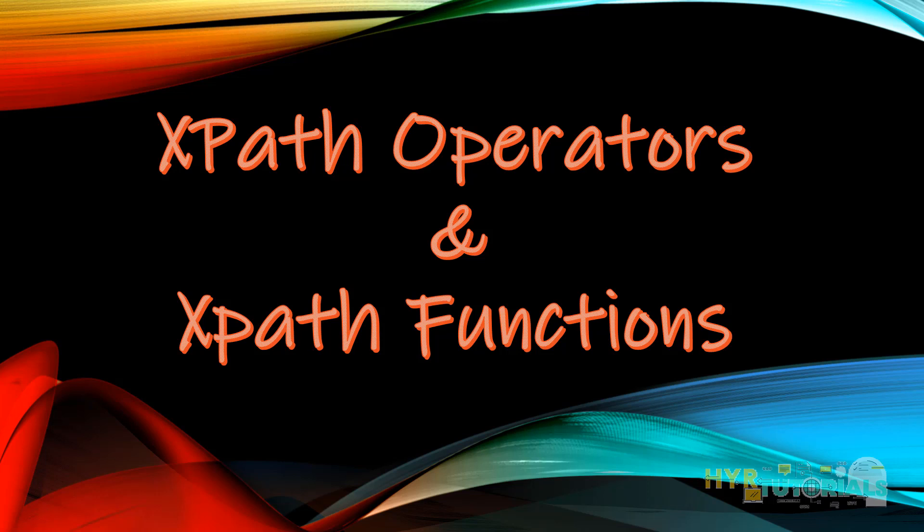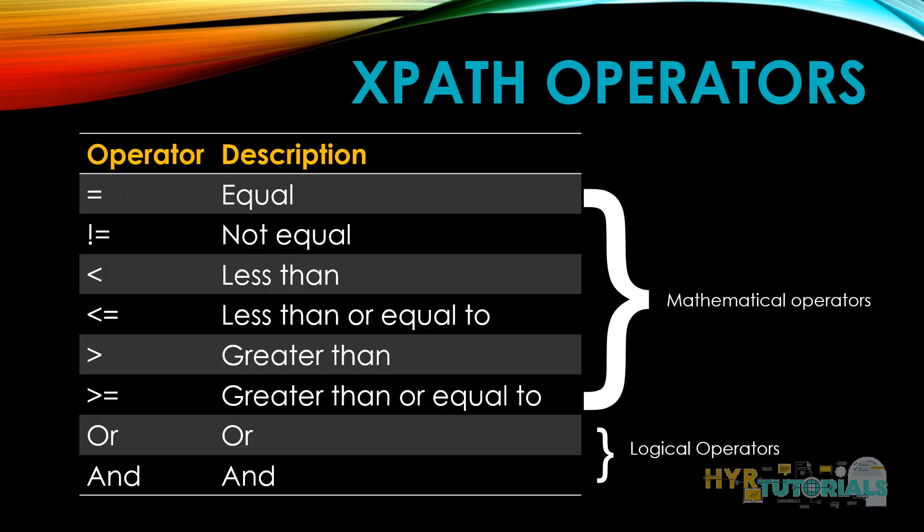So basically, what is meant by an operator? An operator is a symbol that can perform mathematical and logical operations. If you see here, these are the operators that we can use while writing XPath. These operators are divided into two categories: one is mathematical operators, the other one is logical operators.